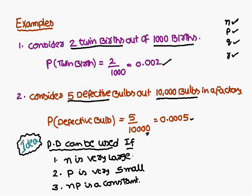The Poisson distribution can be used when n is very large and p is very small. Observing the first example, p is 0.002, and in the second example p is 0.0005 — both very small. Also, n should be very large, p should be very small, and n times p should be a constant. Only then can we use the Poisson distribution.